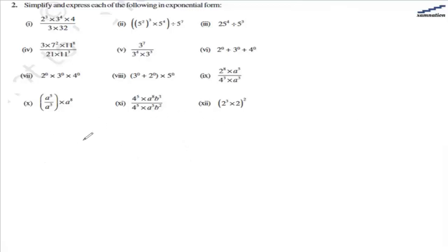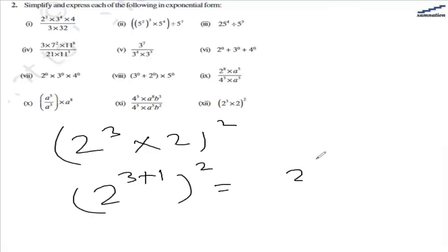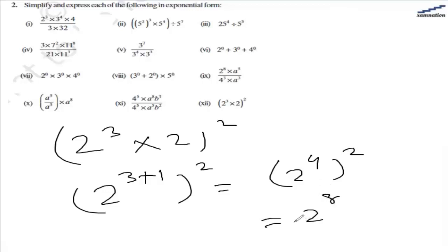In the twelfth part, we have 2 raised to the power of 3 multiplied by 2, all raised to the power of 2. First we solve the inner bracket: same base so the powers add — 3 plus 1 equals 4, giving 2 raised to the power of 4. Now we have a power of a power, so we multiply: 4 multiplied by 2 equals 8. So the answer is 2 raised to the power of 8.